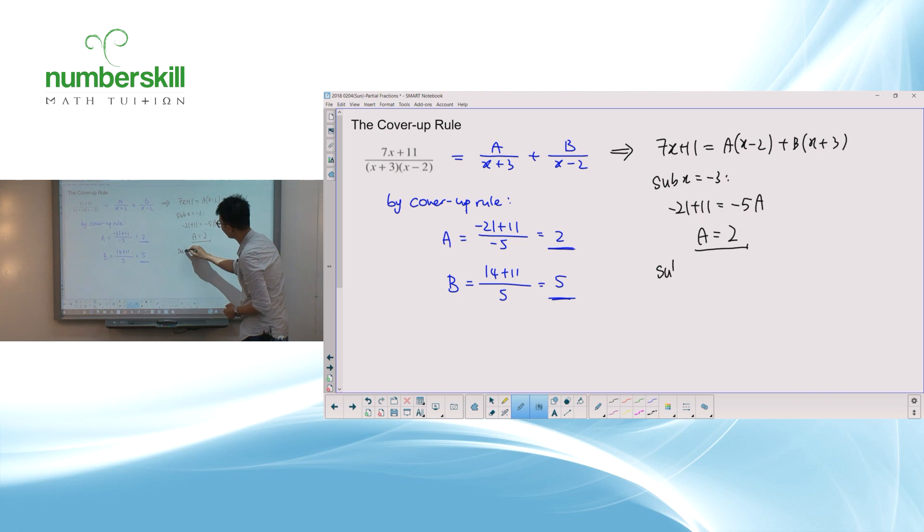How about B? Well, in order to find B, I'm going to substitute x equals to 2. Put it inside there. I'm going to get 14 plus 11 equals to this. It will become 0. I get 5B. And therefore, B is equal to 25 divided by 5, which is 5. Same answer.